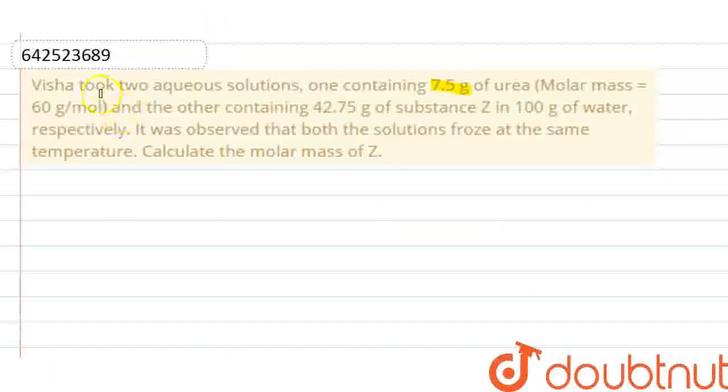Hello everyone, here the question is, Vishat took two aqueous solutions, one containing 7.5 gram of urea and the other containing 42.75 gram of substance in 100 grams of water. It was observed that both the solutions froze at the same temperature. Calculate the molar mass.